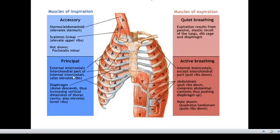The external intercostal muscles originate from rib one to rib eleven and insert into ribs two to twelve. The internal intercostal muscles are involved in forced exhalation, but are also involved during forced inspiration when doing exercise.